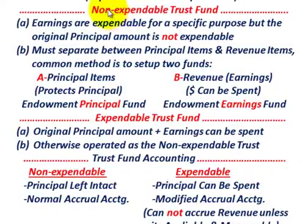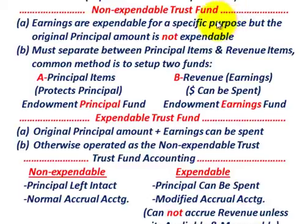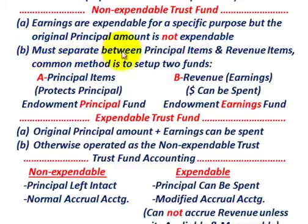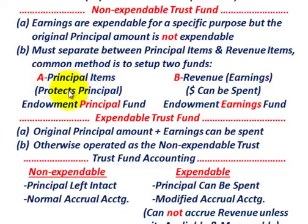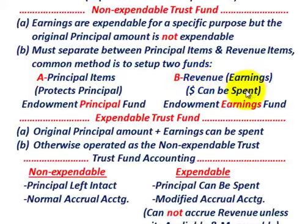For the non-expendable trust fund, earnings are expendable for the specific purpose designated by the contributor, but the original principal amount is not expendable. You must separate principal items from revenue items. A common method is to set up two funds: an endowment principal fund to protect the principal, and a second fund for revenue or earnings — money that can actually be spent.